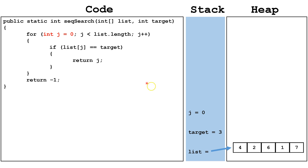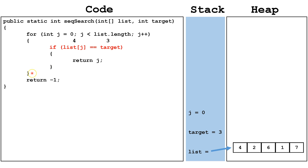First, we start off by initializing j as 0. Next, we're going to check: is j less than the length of the list array? j is currently 0. The list length is 5, because there are 5 indexes. 0 is less than 5, so this is a true statement. Next, we're going to check: is list index j equal to the target? Currently j is 0, so list index j is 4, and our target equals 3. This is a false statement, because 4 is not equal to 3, so we're going to skip this block of code and go back down to the end of the for loop. At the end of the for loop, we're going to increment j by 1, so now j equals 1.